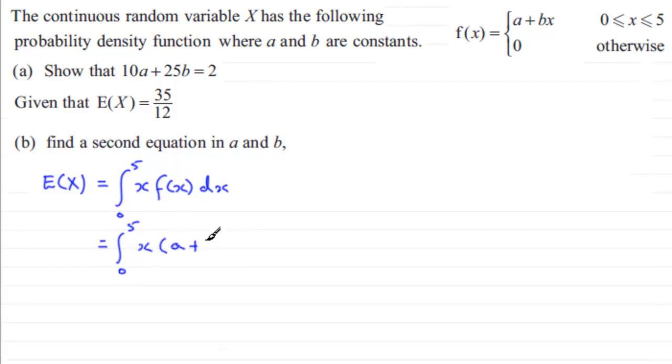So we've got the integral going from 0 to 5 of x multiplied by f(x), which is a plus bx, and we're integrating with respect to x. Next, I want to expand the bracket. So we're still integrating between 0 and 5, expanding the bracket gives us ax plus bx squared.